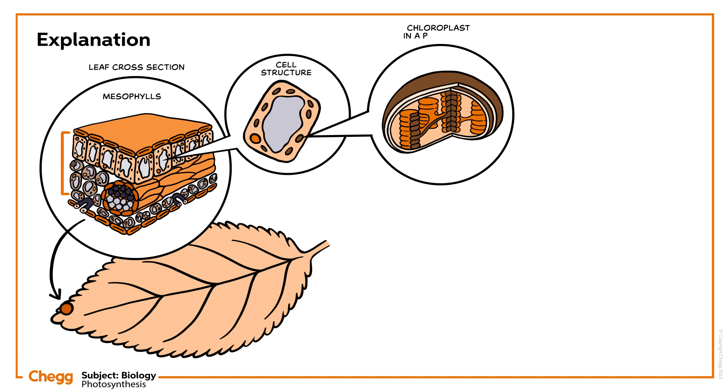Mesophylls consist of chloroplasts, and that is where the process takes place. Inside the chloroplast, thylakoids are present, where the absorption of light at a certain wavelength takes place. The function of the pigment chlorophyll, present inside the thylakoid, is to convert solar energy into chemical energy.